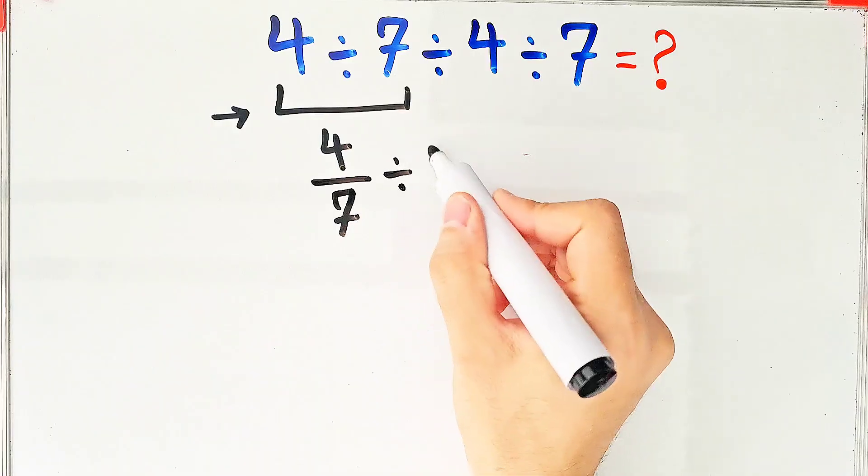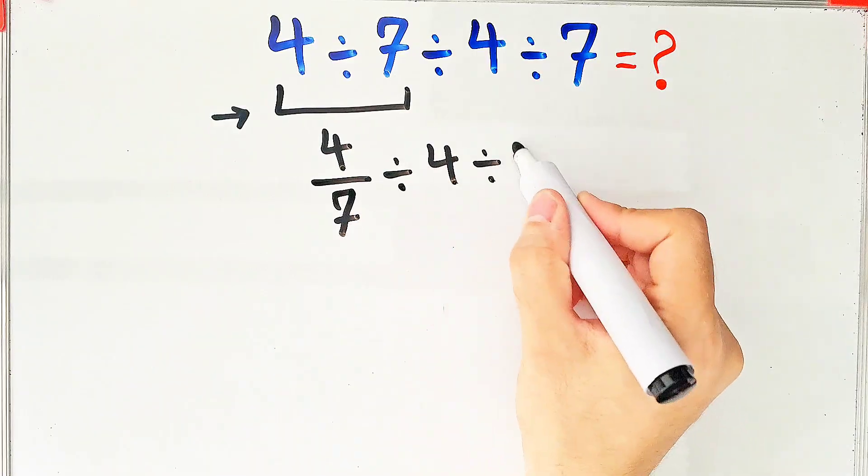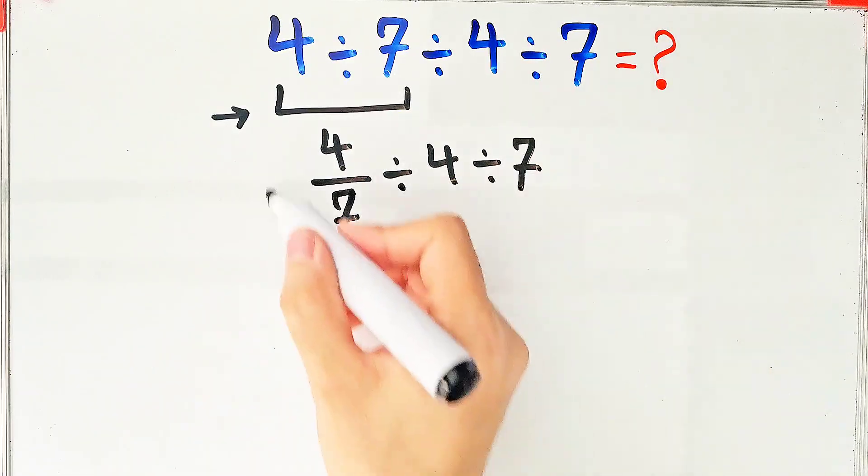4 divided by 7 equals 4 over 7. We have 4 over 7 divided by 4, then divided by 7.